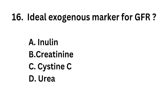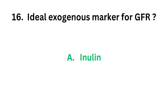Question number 16. Ideal exogenous marker for GFR (Glomerular Filtration Rate). Option A: Inulin. Option B: Creatinine. Option C: Cystatin C. Option D: Urea. The correct answer is Option A, Inulin. Inulin is the ideal exogenous marker for GFR.